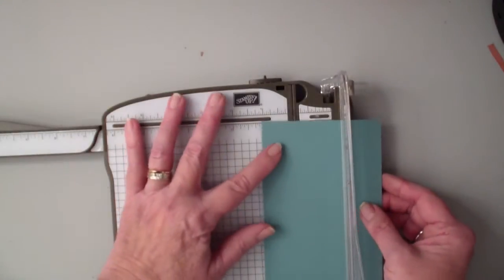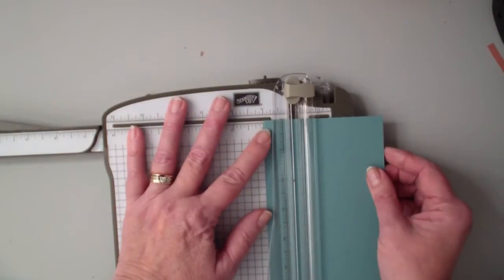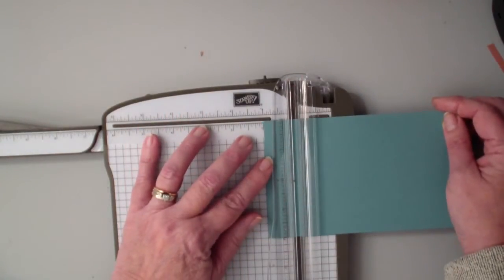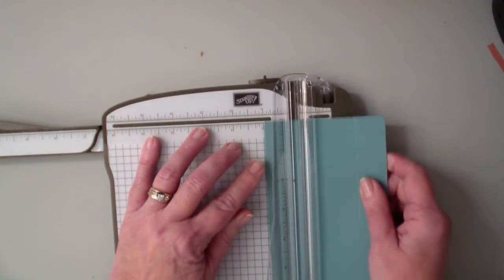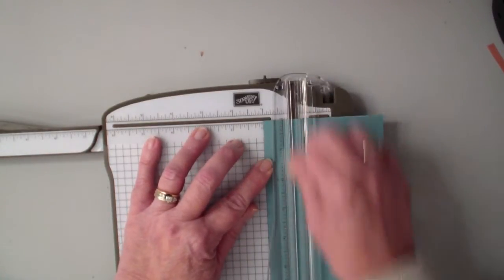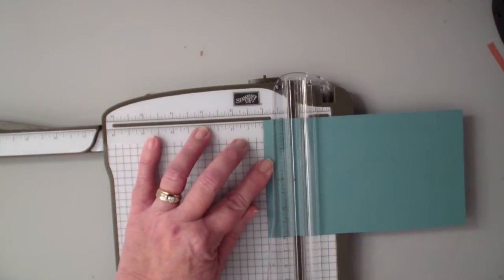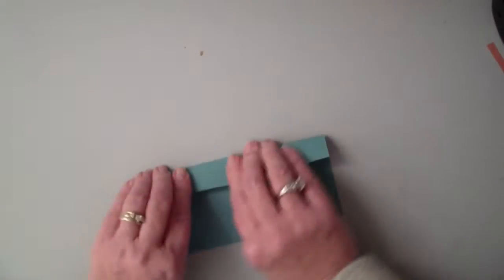I'm going to go around on all four corners and I'm going to score at 1 inch. 1 inch, all four corners. And this is going to form the carrier base. Like so. I'm going to just score them over.